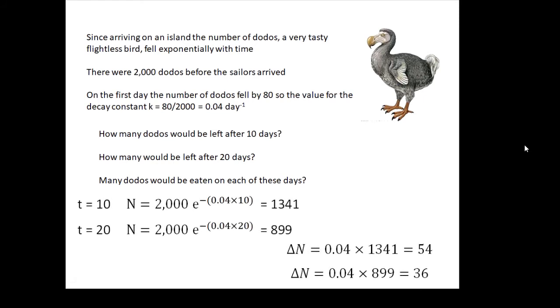And here we go. So we have n equals n naught e to the minus kt. So very much just bunging in the numbers in the first one. 2,000 e to the minus 0.04 times 10. And that gives us 1,341. And on the 20th day, 899.